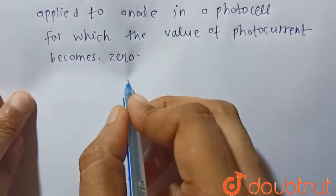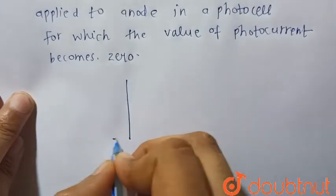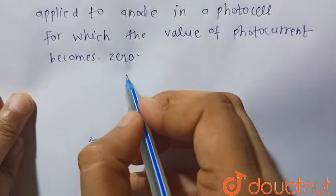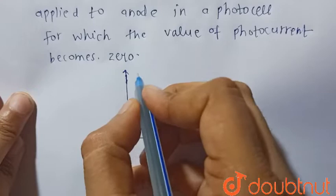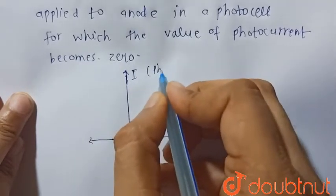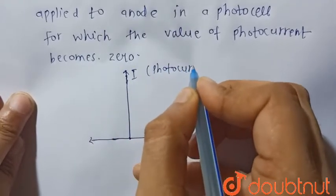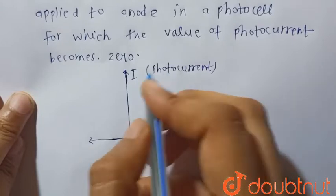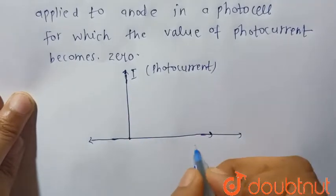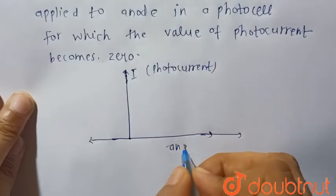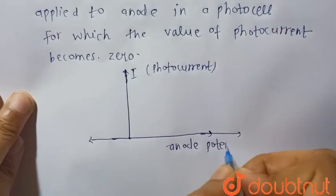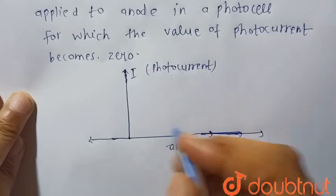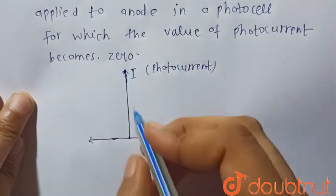We can see it by the graph. So this will be as follows. In the y-axis, let's say this is the photo current, and in the x-axis, let's say this is the anode potential, that is the potential applied at the anode.